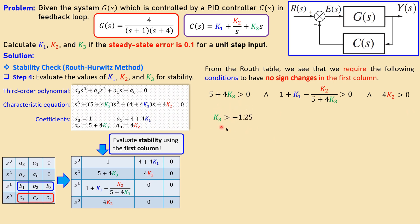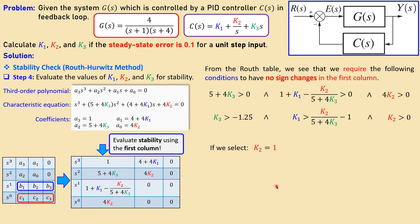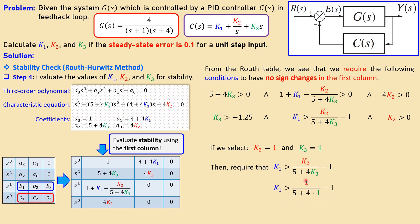Rewriting those conditions in simplified form: k3 must be greater than −1.25, and k2 must be greater than zero. Those two are clear. The third condition for b1 depends on k2 and k3, so we can rewrite k1 in terms of k2 and k3. So k1 is expressed as a function of the chosen values of k2 and k3.